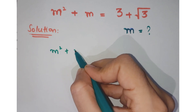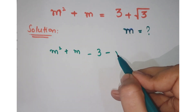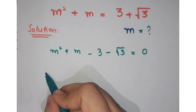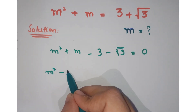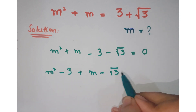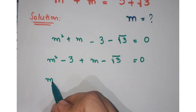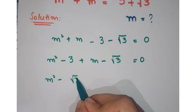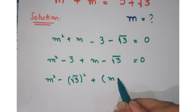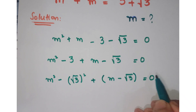Take m squared plus m and bring the two constant values to the left hand side. Now rearrange it as m squared minus 3 plus m minus under root 3 equals 0. Further, you can write it as m squared minus under root 3 whole squared plus bracket m minus under root 3 equals 0.